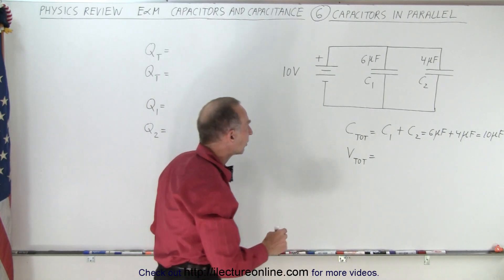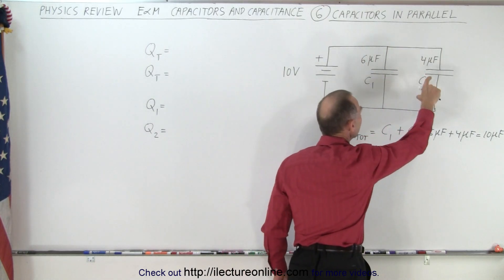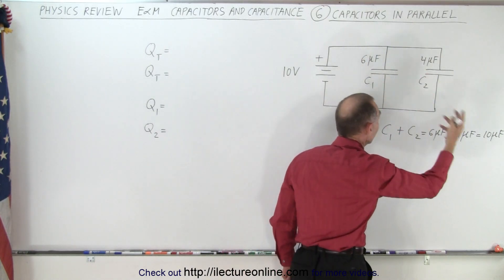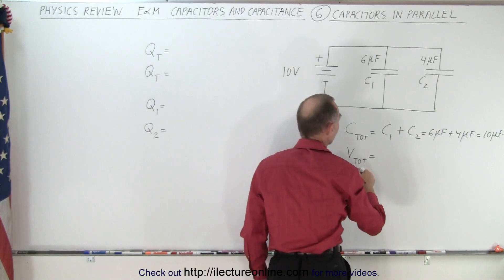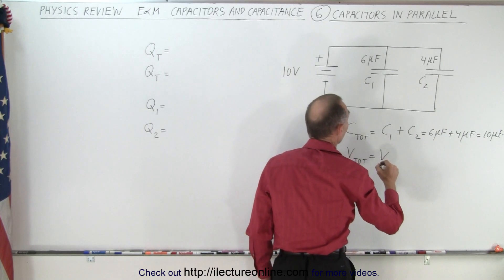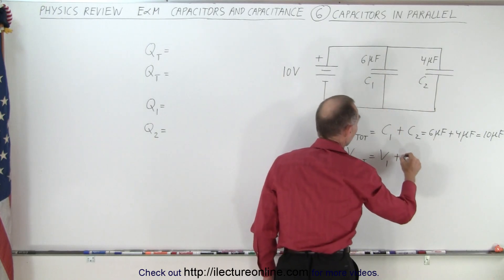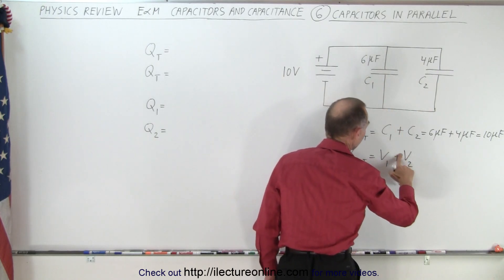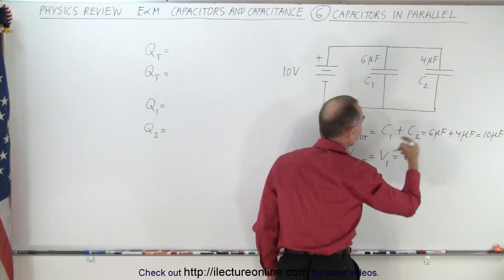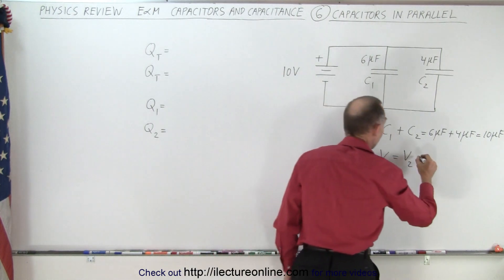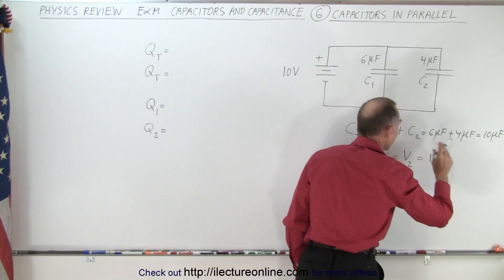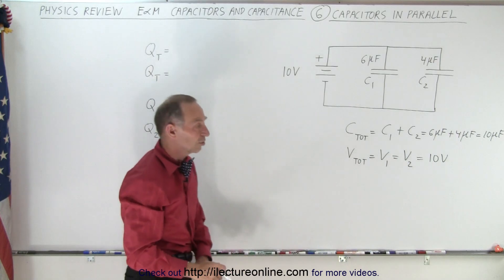Well, it turns out that since these are parallel branches, each branch must have the same voltage on it since they're parallel, and they're parallel to the voltage supply. So therefore, the total voltage equals the voltage on the first capacitor, not plus, equal to the voltage on the second capacitor because they all have the same voltage. And so that means they're all equal to 10 volts. Every branch has the same voltage on it, which is 10 volts.